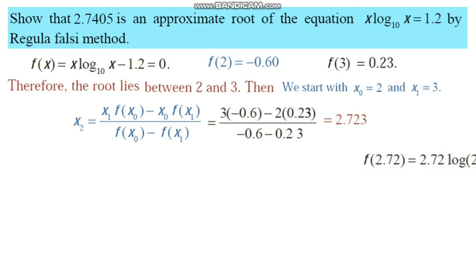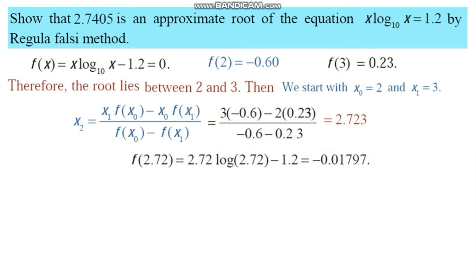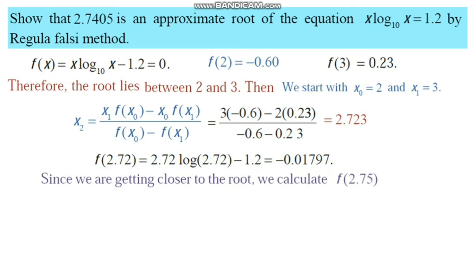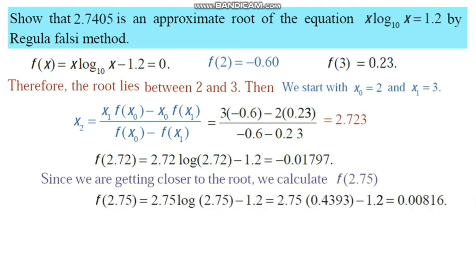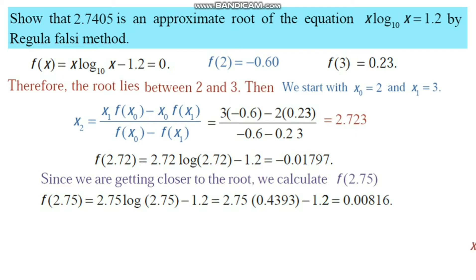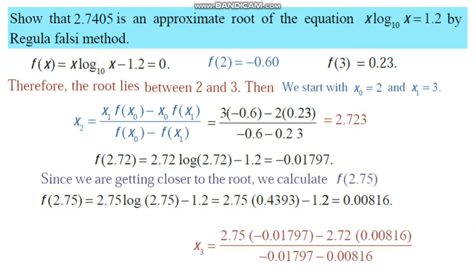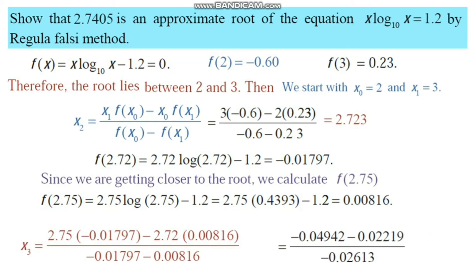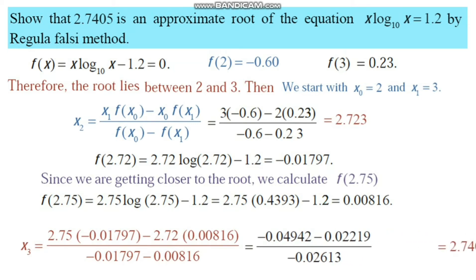We compute f(2.72), which is negative, showing we are getting closer to the root. We then calculate f(2.75) ≈ 0.00816. Applying the Regula Falsi formula for x₃ and substituting those values, we obtain x₃ = 2.7405, which is the required approximate root of the given equation.